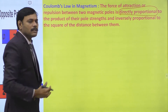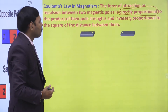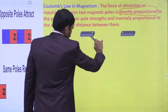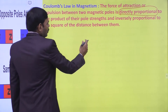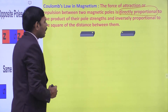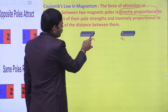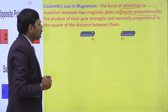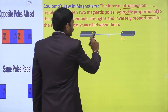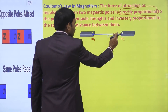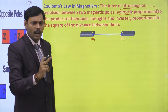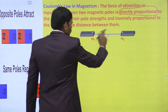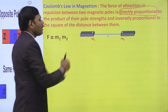To understand this statement, let us consider a diagram. In this animated explanation, you can clearly observe two magnetic poles of pole strengths M1 and M2, separated by a distance shown by the blue arrow. Let small r be the distance of separation between the magnetic poles. Then the force of interaction between the two magnetic poles is given by Coulomb's Law of Magnetism.